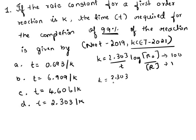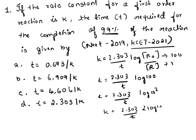2.303/t × log(100). Log 100 is 2, or you can write it as 2.303/t × log(10²). So k = 2.303/t × 2 × log(10). We know that log 10